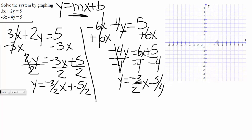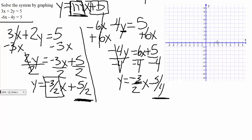So it looks like we have our two equations, which are a little bit ugly because of the fractions, but they're still very much doable. One thing you may notice about these two lines is that — the reason we put equations in slope-intercept form is because it tells us the slope and the y-intercept, which are the two pieces of information we use to graph. The equation on the left has a slope of negative 3 halves and a y-intercept of 5 halves. The equation on the right has a y-intercept of negative 5 fourths but also a slope of negative 3 halves.